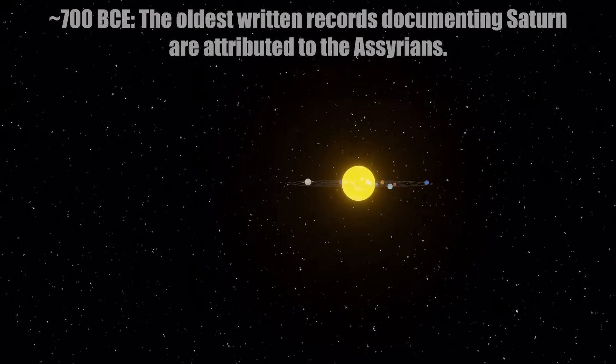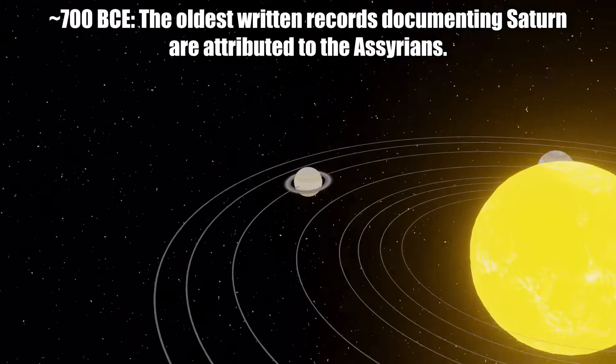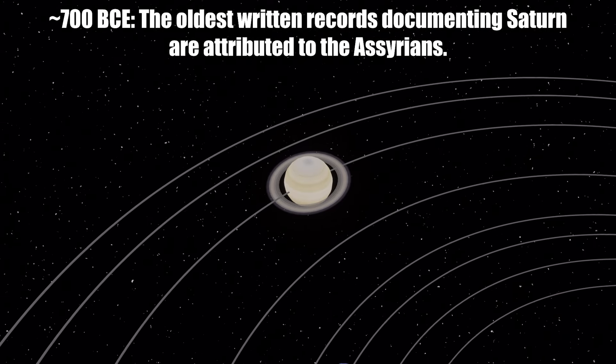Here are some key timelines. 700 BCE, the oldest written records documenting Saturn are attributed to the Assyrians. They describe the ringed planet as a sparkle in the night and name it Star of Ninib.